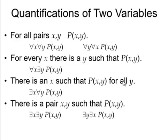There is an x such that P of x,y for all y. For all y, P of x,y will be true.